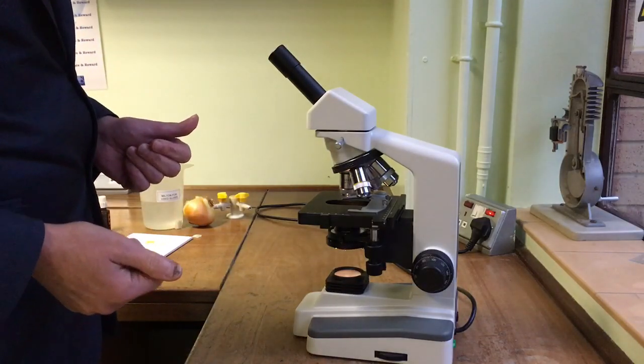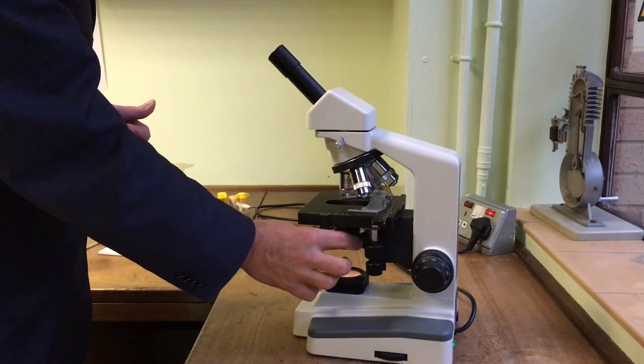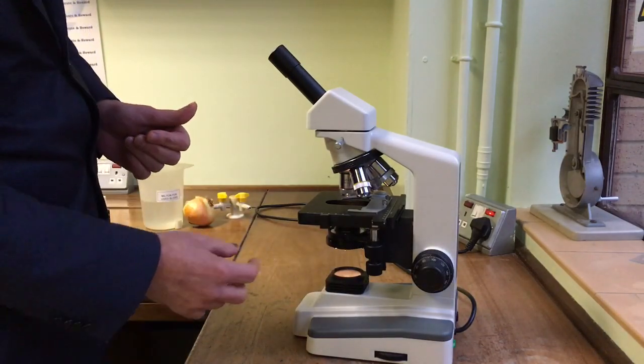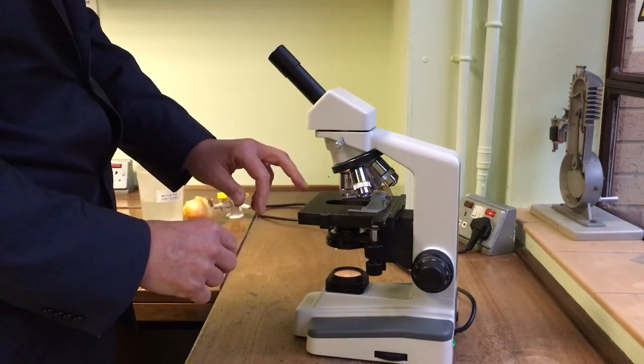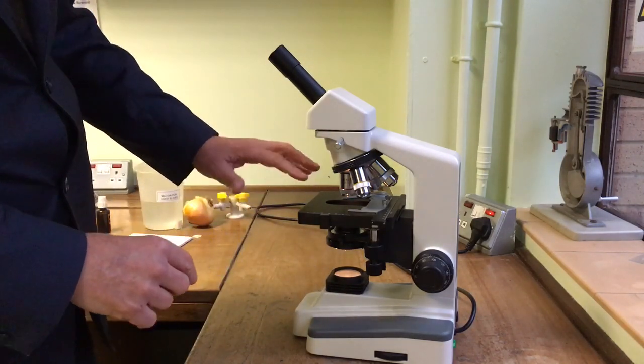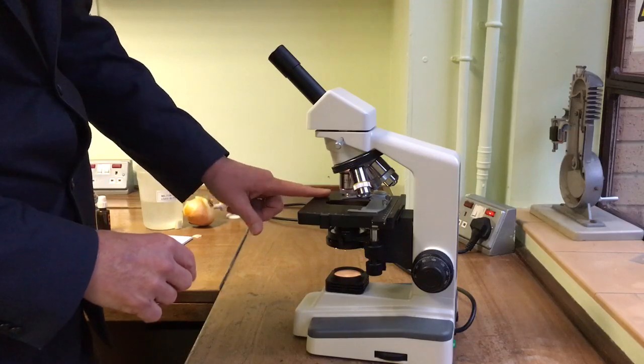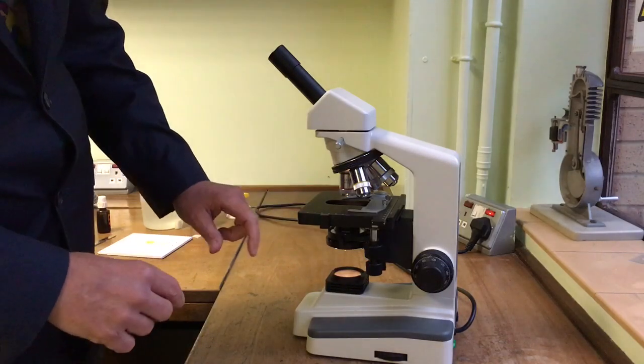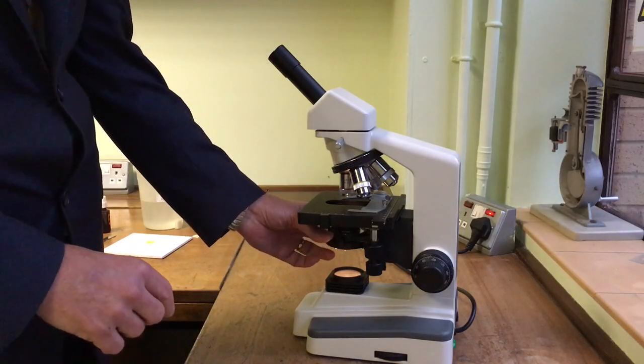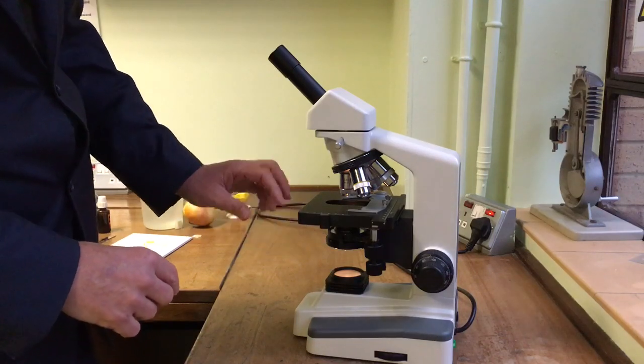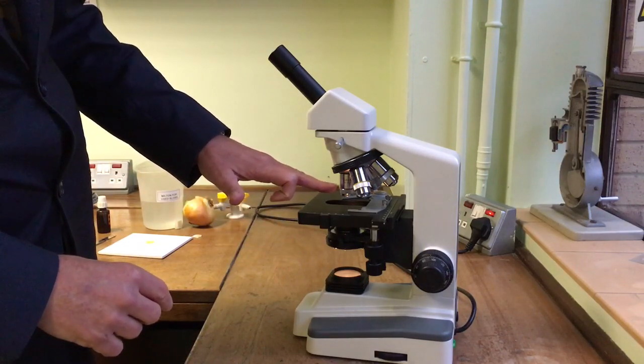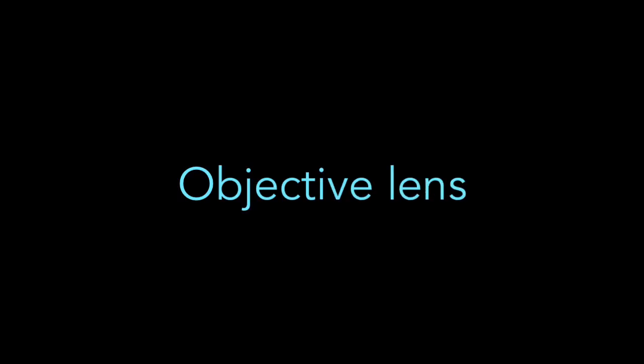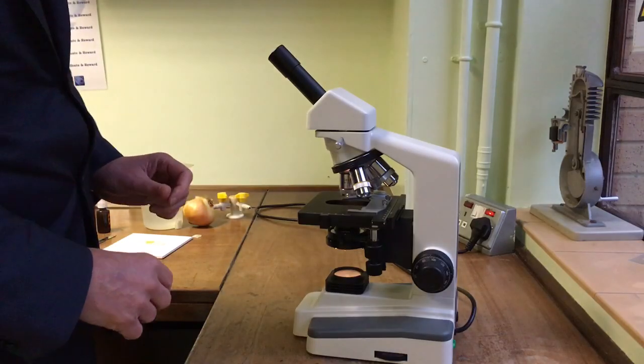This is the school microscope. You can see that it has a built-in light source underneath which shines up from here. To view the slide, the light needs to shine through the slide, which is placed onto this part called the stage. There's a condenser lens underneath which helps to focus the light, and then two sorts of lens: the objective lens and the eyepiece lens. I'm starting with the lowest power objective lens.